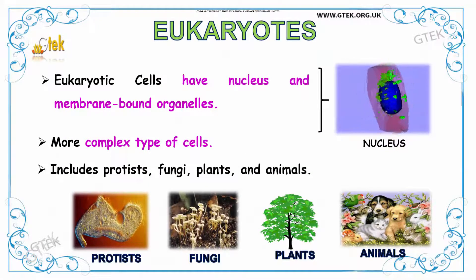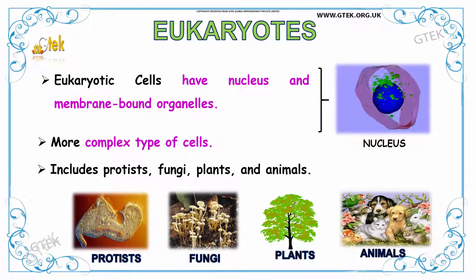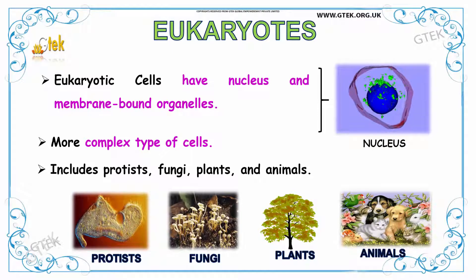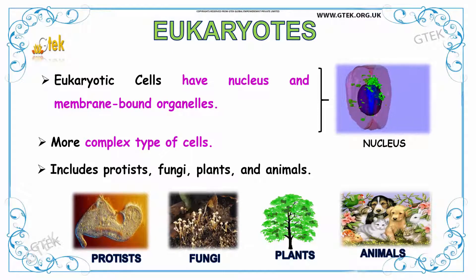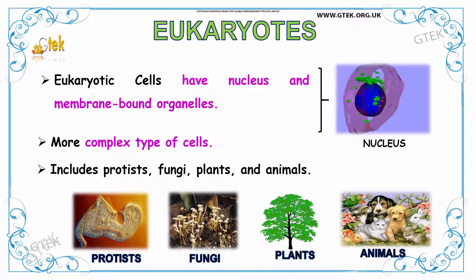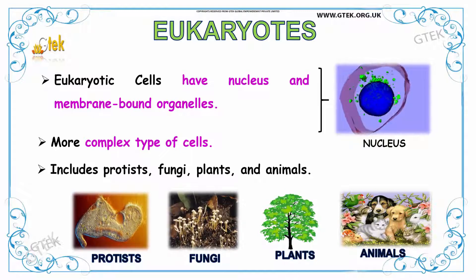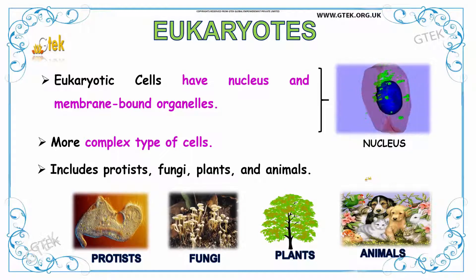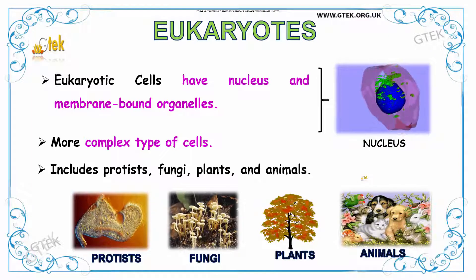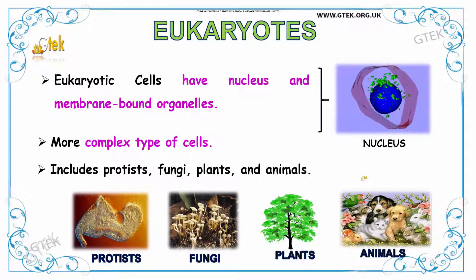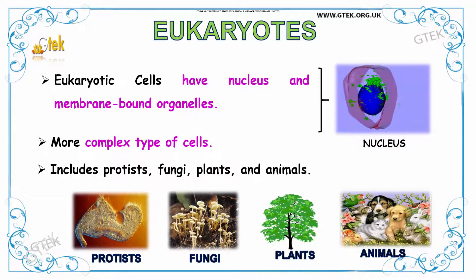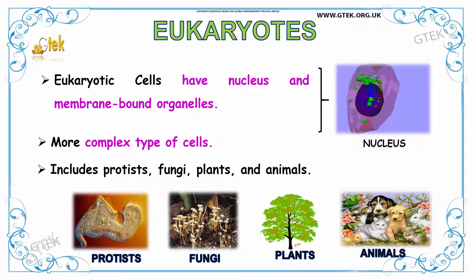Now we are going to see about eukaryotes. Eukaryotic cells have a nucleus and membrane-bound organelles. They are more complex types of cells and include protists, fungi, plants, and animals.